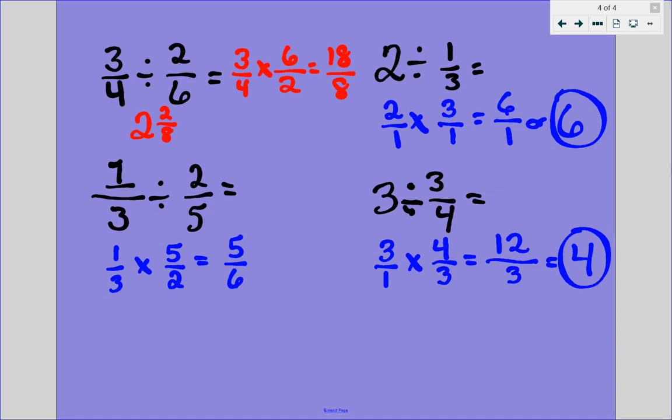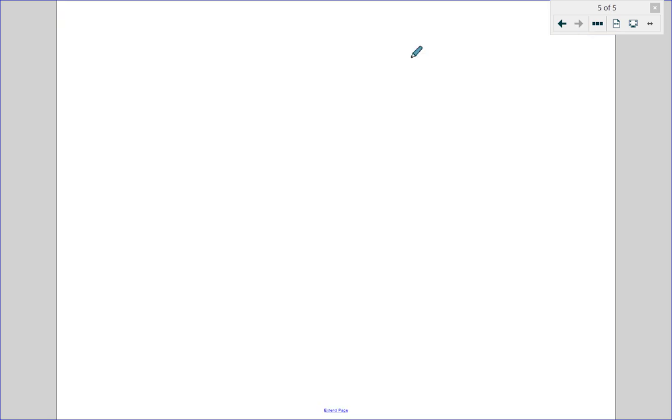That is the process we use for dividing fractions. Let's just do one more example. We have 1 half divided by 2 thirds. 1 half divided by 2 thirds equals blank.